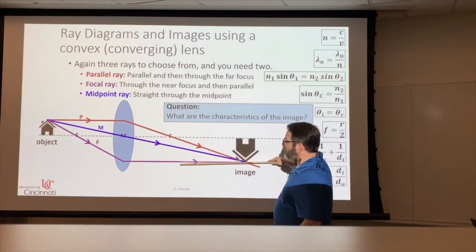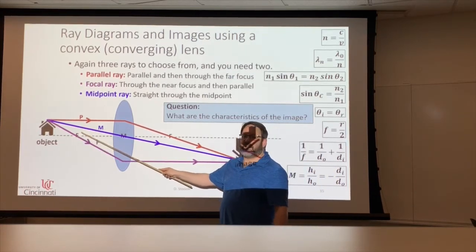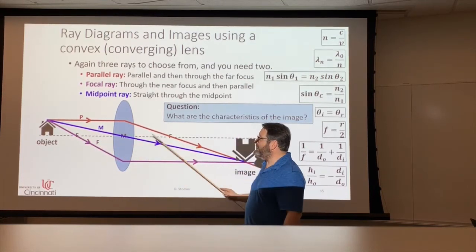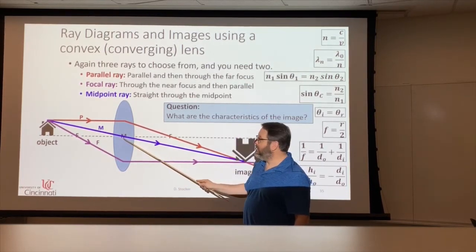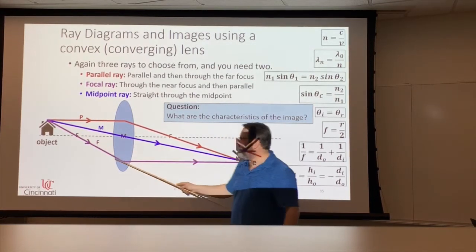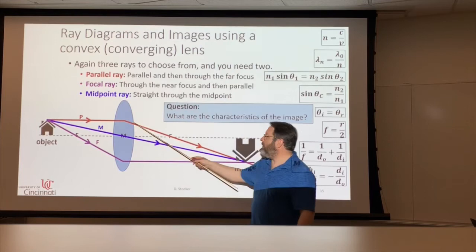When they came in parallel, they went up to a focal point on this side. So with the lens, you can use a focal point on either side of the lens and the midpoint. Midpoint is usually the easiest one. You just draw it straight through the focal and parallel or parallel and through the focal.